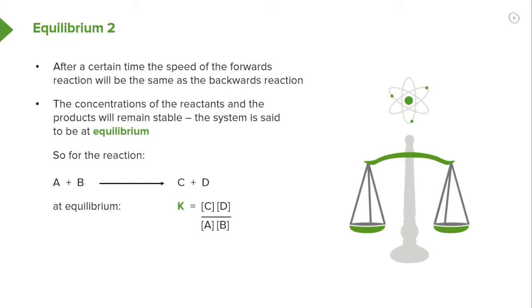The equilibrium constant is always given as the combined concentration of products over the combined concentration of reactants. The brackets there, around the C, denote the concentration of C. Likewise, the same for D, A and B. So, as you can see, an equilibrium constant is given by the concentration of one product, multiplied by the concentration of the other product, divided by the concentration of a reactant, multiplied by the concentration of another reactant.